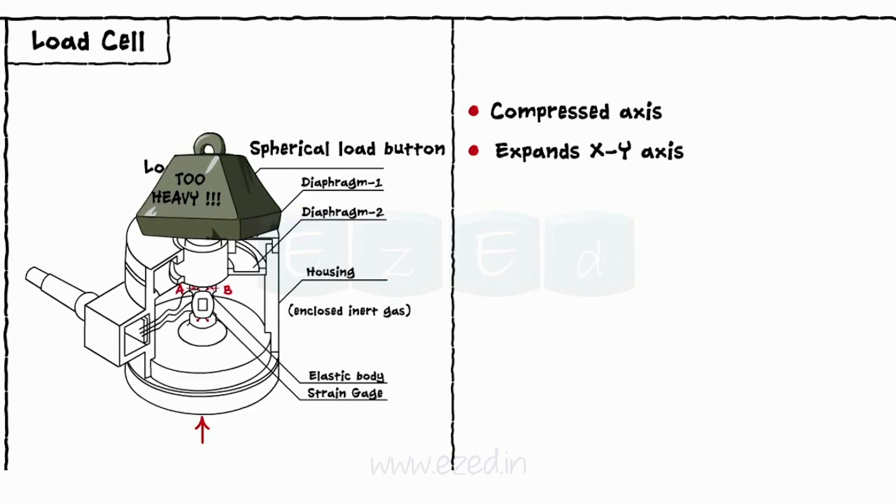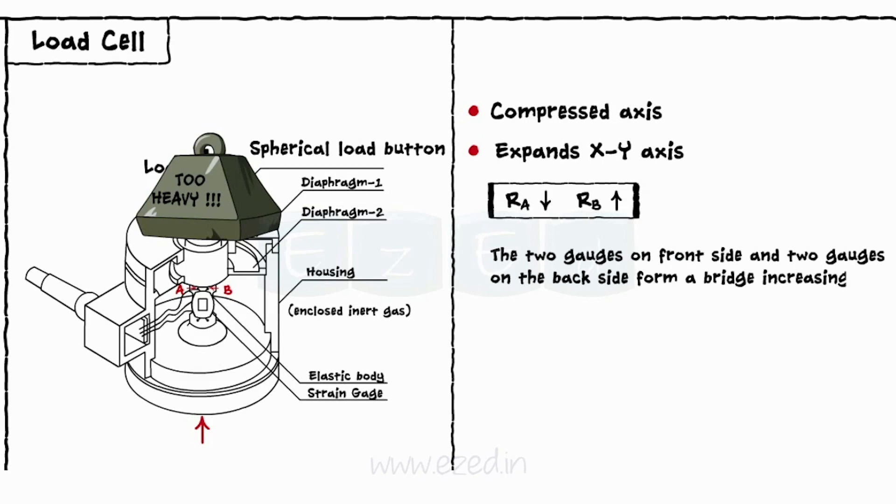Due to this, the resistance of strain gauge A will decrease and the resistance of strain gauge B will increase. The two gauges on the front side and two gauges on the back side form a bridge, increasing the sensitivity of a load cell four times as compared to a single gauge.